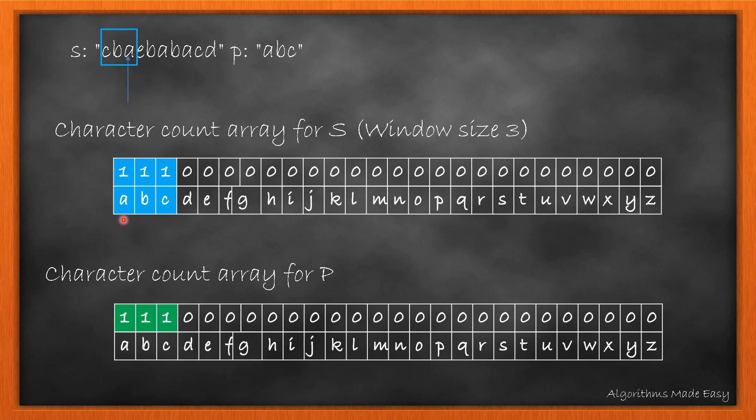While iterating, first we increment the count of character at current index. Now, we have the count of all the characters of the window in array for S. So, we compare both these arrays to see if these are anagrams.